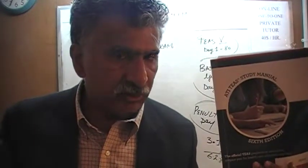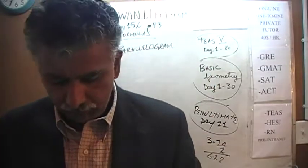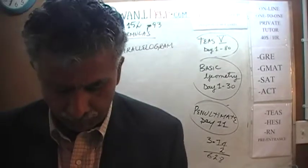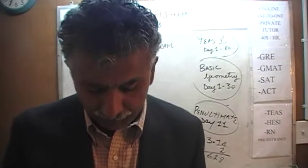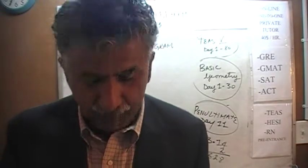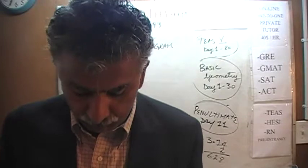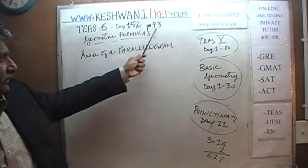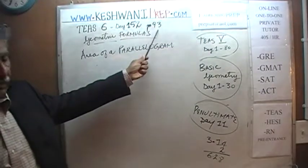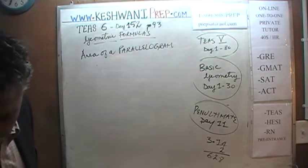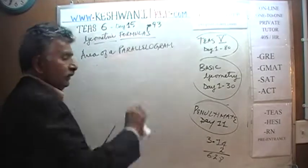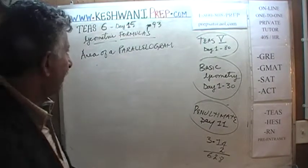If you do not own this book already, purchase one immediately — you are going to need it. Today we will figure out how to arrive at the area of a parallelogram, which is the fourth entry. We are on page 93. Today is our lesson number 153. Turn to page 93, where we see basic geometric formulas.